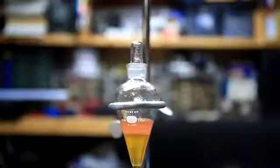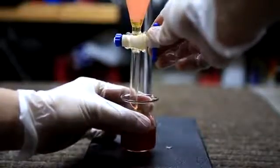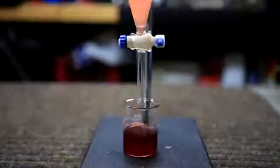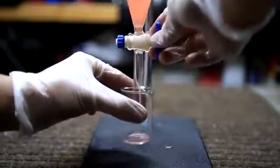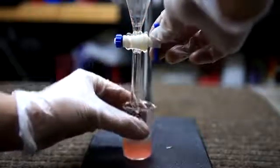This time, the lower DCM layer is yellow and not a dark red, indicating that there is much less phenolphthalein present. The lower DCM layer is combined with the previously drained DCM. The aqueous layer, which contains mostly unreacted phenol and sulfuric acid, is disposed of.